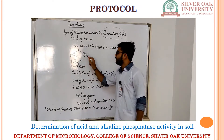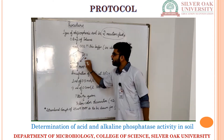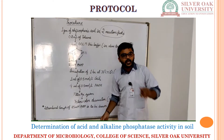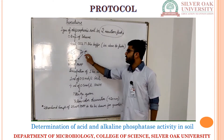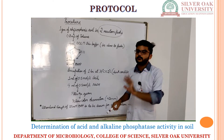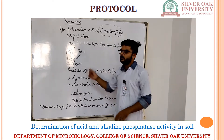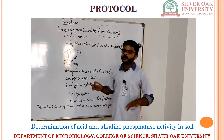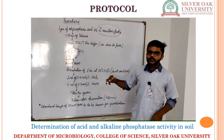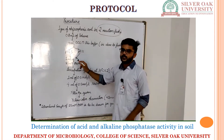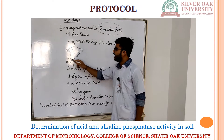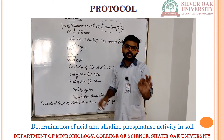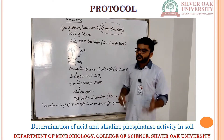In one flask, we will be taking trace buffer having a pH of 6.5, and in another flask, we will be taking trace buffer having a pH of 11. These will be used for acidic and alkaline phosphatase respectively. After that, in both of the reaction flasks, we add 1 ml of 25 millimolar p-nitrophenol phosphate, which is our substrate.